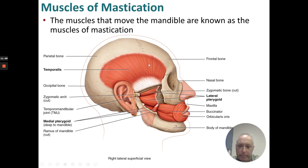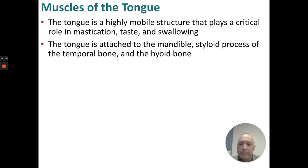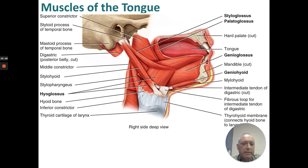Muscles for mastication — that's chewing: temporalis, the big chewing muscle, medial pterygoid, and the lateral pterygoid. The tongue is critical in mastication, taste, swallowing, and speech. The tongue is attached to the mandible, the styloid process of the temporal bone, and the hyoid bone. Tongue muscles include: genioglossus, geniohyoid, styloglossus, palatoglossus, and hypoglossus.